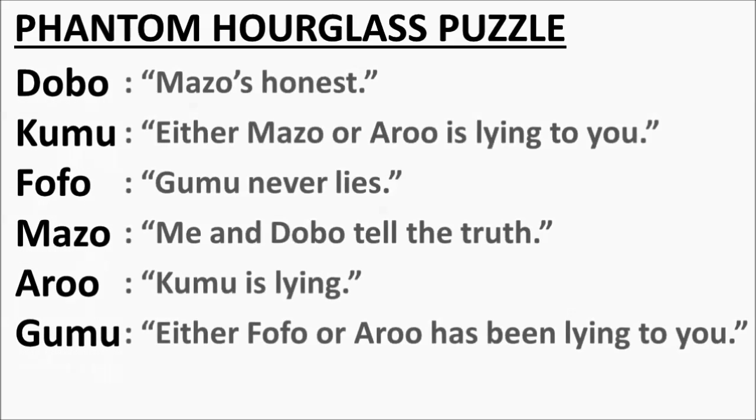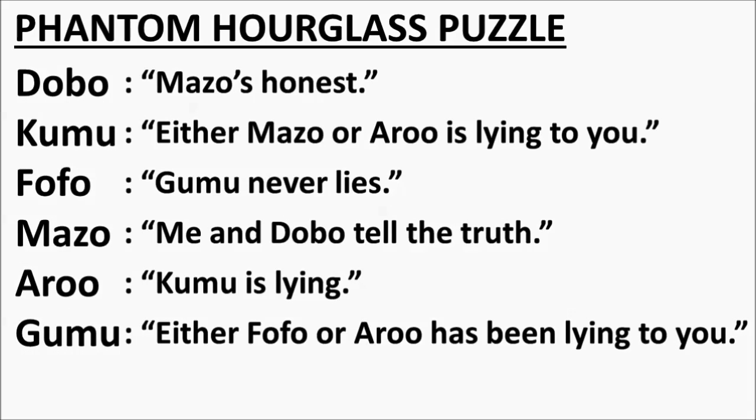Now that we have some intuition for Knight and Knaves problems, let's take a look at the Anuki-Yuke puzzle from Phantom Hourglass. It features six Islanders. Do you think you can solve it? Here's a hint. With six Islanders, there would normally be 64 possible combinations of Knights and Knaves. However, we can assume there is only one Knave, so we can narrow things down to only six possibilities. Good luck. The solution is in the link in the description, and please remember to keep your comments spoiler free.